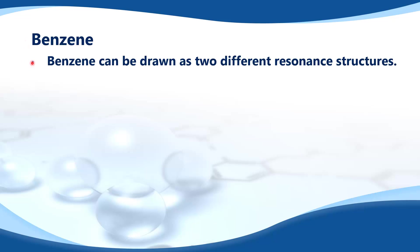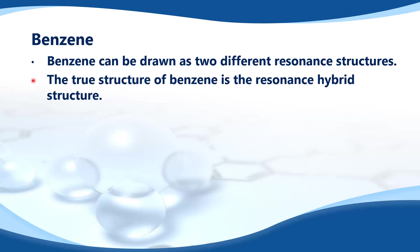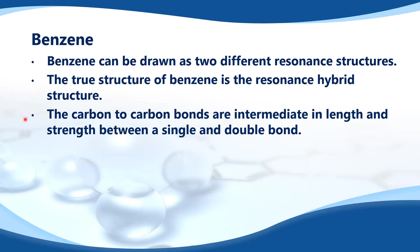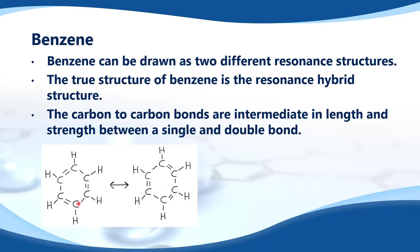Benzene can be drawn as two different resonance structures. The true structure of benzene is the resonance hybrid structure. The carbon-to-carbon bonds are intermediate in length and strength between a single and double bond. Here are the two resonance structures of benzene — as you can see they have alternating single and double bonds. However, the true structure is drawn as the resonance hybrid structure, where all the carbon-to-carbon bonds are of equal length and strength, intermediate between a single and a double covalent bond.